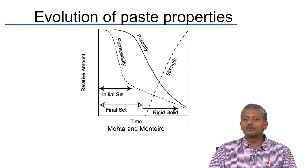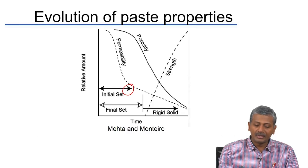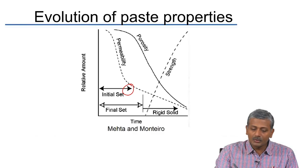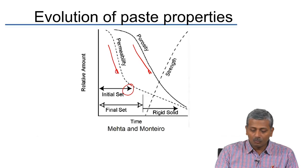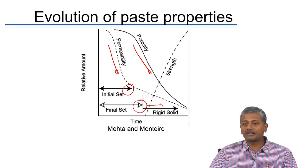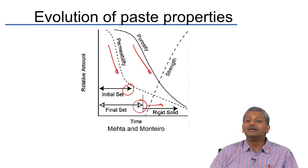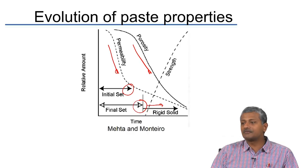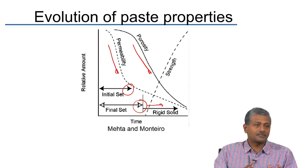The physical meaning of hydration reactions: initial set happens at the end of the dormant period, when sufficient hydrated layers form to drastically reduce permeability and porosity. Beyond the final set, the material transforms from a viscoelastic material into a rigid, mostly brittle solid. Once final set occurs, the dimensions of the object can no longer be changed. Before final set, the paste has what is called 'green strength' — it is stiff but not yet gaining strength.